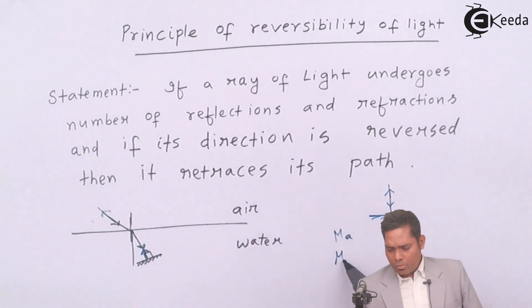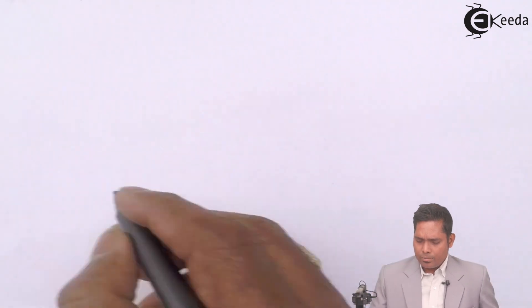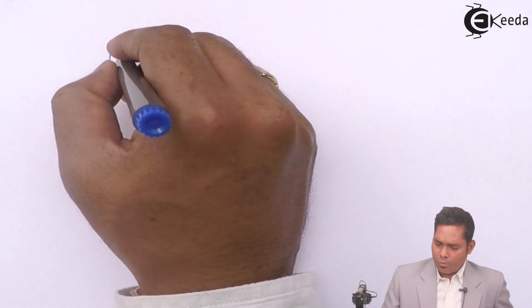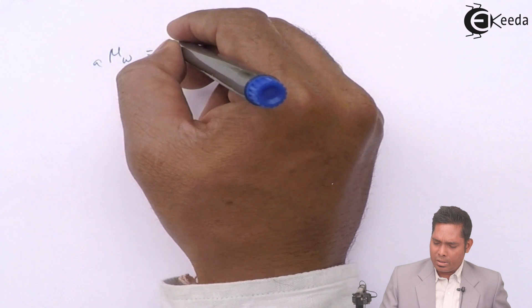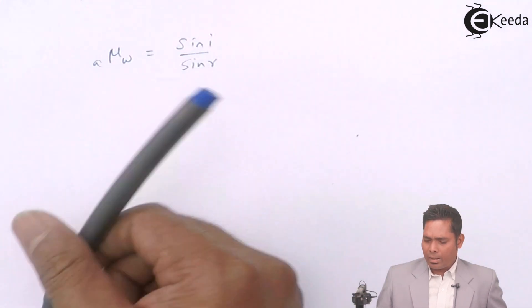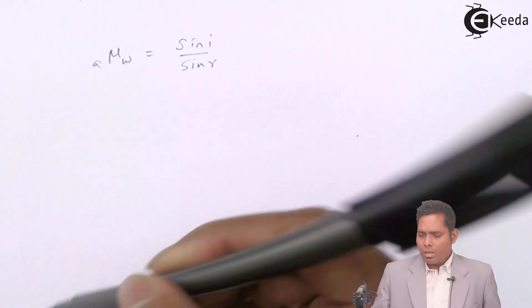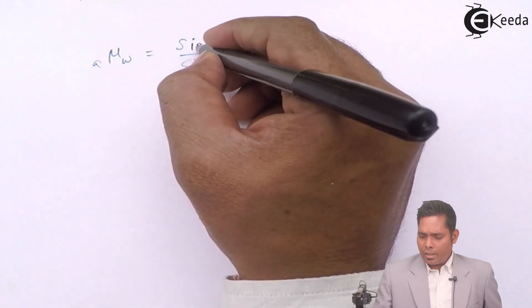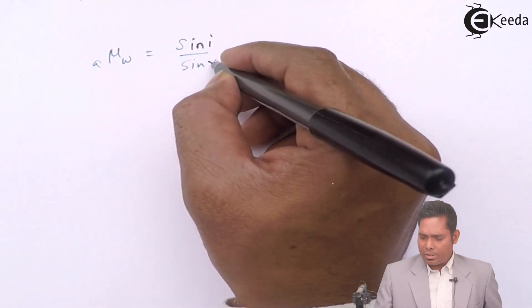Then from here we say that if I apply Snell's law, then I will write mu of water with respect to air is sine i upon sine r, where i is the angle of incidence and r is the angle of refraction.